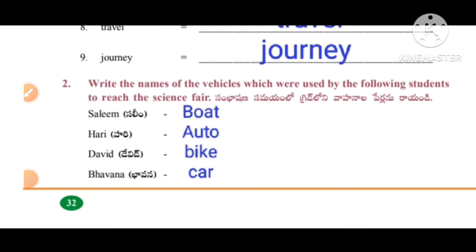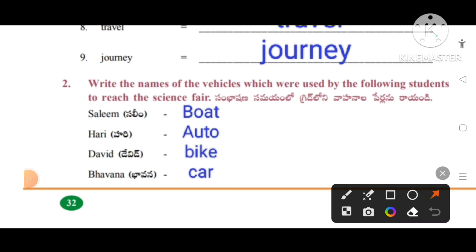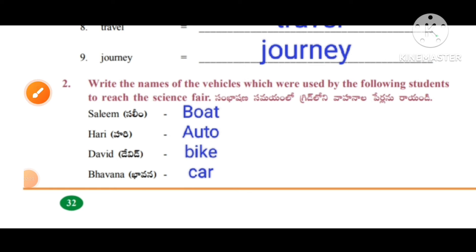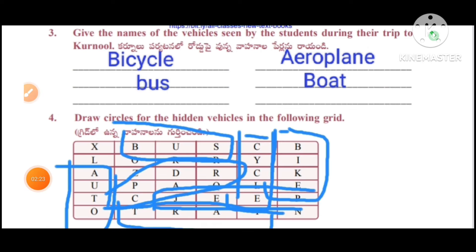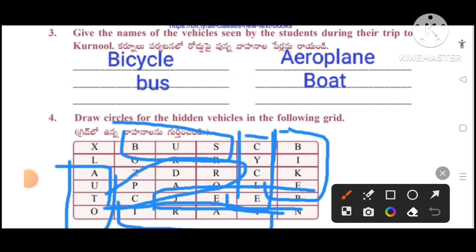Write the names of the vehicles which were used by the following students to reach the science fair. Give the names of the vehicles used by the students during their trip to Karnool. Bicycle, aeroplane, bus, boat.